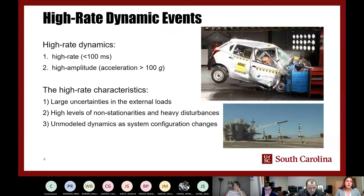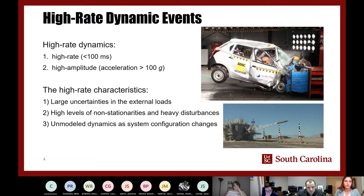High-rate dynamic events are defined as high-rate and high-amplitude events. By high-rate, it means anything that happens under a 100 millisecond timescale. By high-amplitude, any event with an acceleration over 100 Gs. These are events such as crashes, impacts, and blasts. They are characterized by large uncertainties in external loads, high levels of non-stationarities and heavy disturbances, as well as unmodeled dynamics experienced by the system.